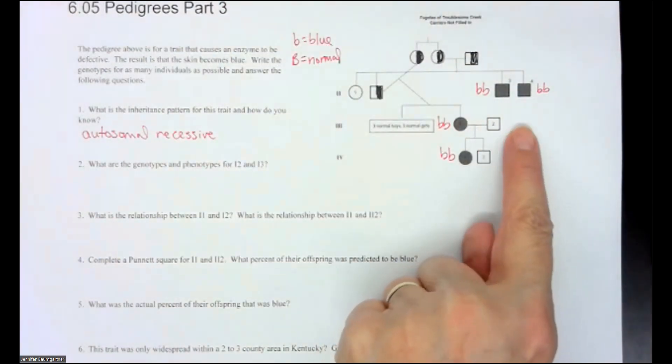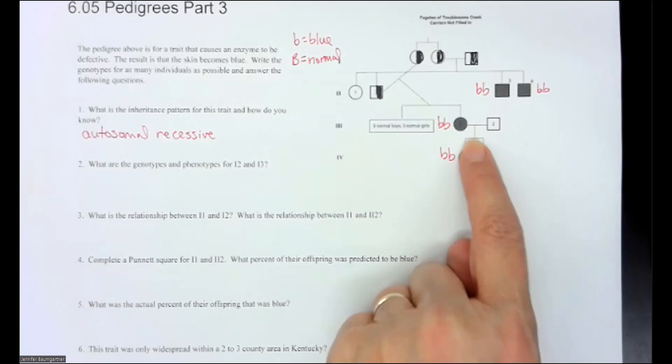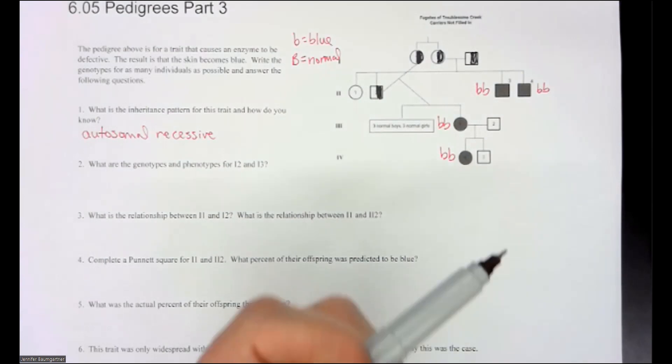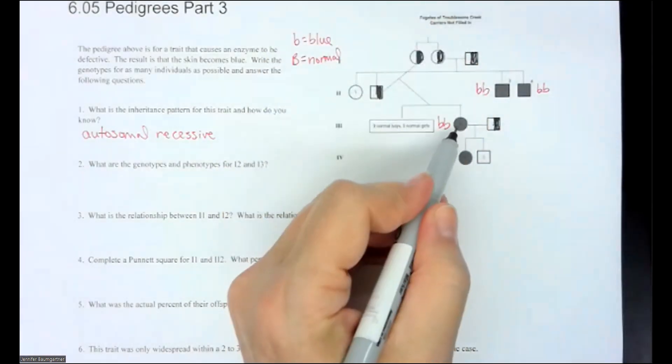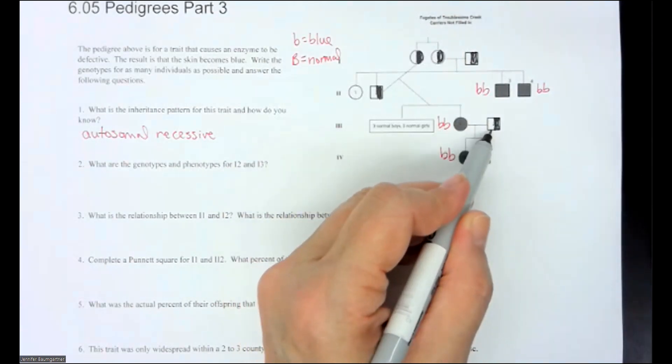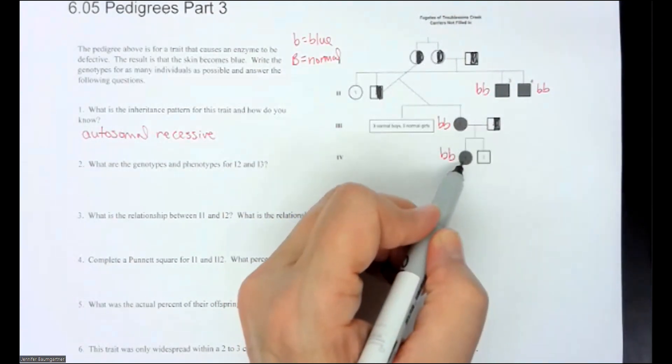Luckily here, we finally brought somebody in from outside the family to marry in, but think about, pause the video if you need to, what are going to be the genotypes for these guys? Did you say that this guy has to be a carrier? If you did, you're correct, because this is homozygous recessive. If he was homozygous dominant, they could not have a daughter that has the disease.